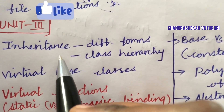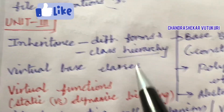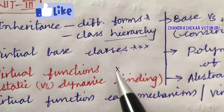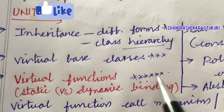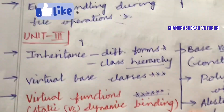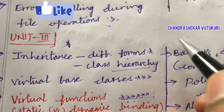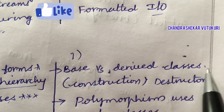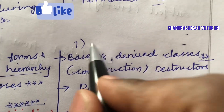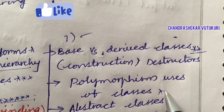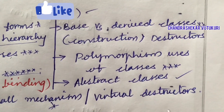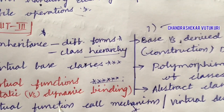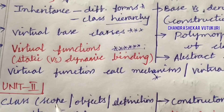Define the term inheritance, its different forms, class hierarchy, and virtual base classes — this is a topmost question. Virtual functions related to static and dynamic binding is a five-star question likely to occur this time. Question numbers 6 and 7 are from Unit 3. Virtual function call mechanism and base versus derived classes are also topmost questions for question 7. Polymorphism and uses of classes is a topmost question. Abstract classes may be a short question, and virtual destructor may also be a short question — these are very important gunshot questions for OOP using C++ under Unit 3.